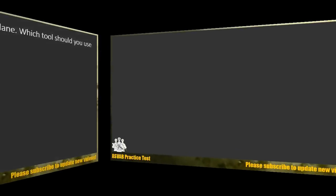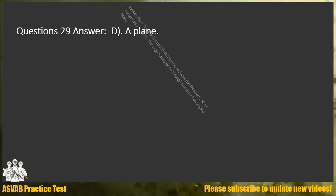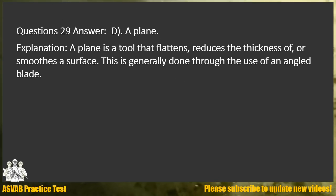Answer D. A plane. Explanation: A plane is a tool that flattens, reduces the thickness of, or smooths the surface. This is generally done through the use of an angled blade.